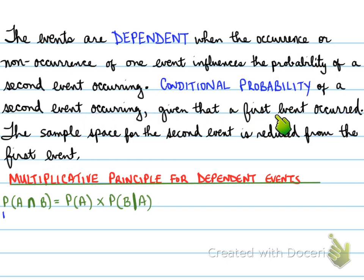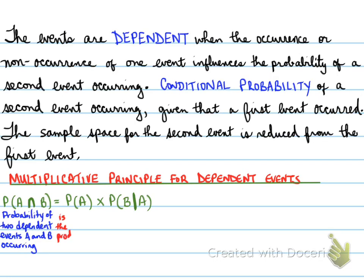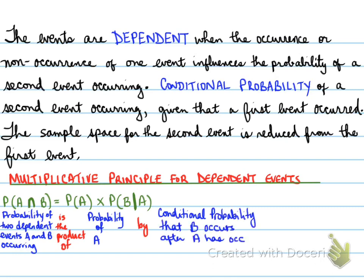The key here is that given that the first event occurred, the sample space for the second event is reduced from the first event. So provided that A occurs, you can then calculate the probability of B. The probability of two dependent events is the product of the probability of the first event multiplied by the conditional probability that B occurs after A has occurred. This definition is very important to calculate.